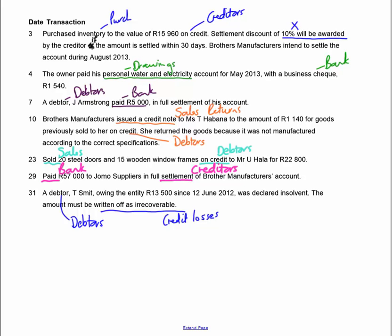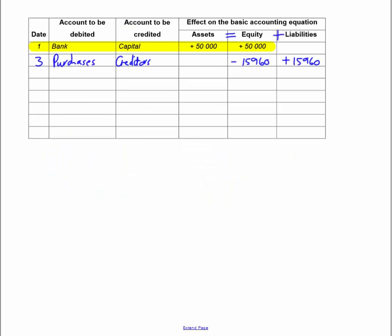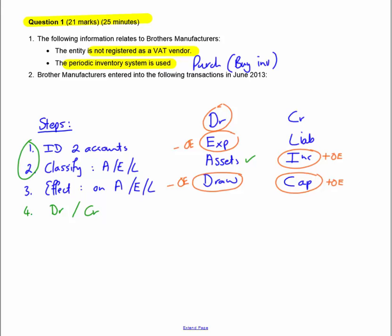Transaction on the 4th: the owner paid his personal water and electricity account with a business cheque — R1,540. The two accounts are drawings and bank. Drawings falls under owner's equity. We debit expenses, assets and drawings, which has a decreasing effect on owner's equity. Bank is an asset — less money means less assets. So debit drawings (decreases owner's wealth) and credit bank (asset decreasing). Debit the asset if it's increasing, but if it's not increasing, you don't debit.